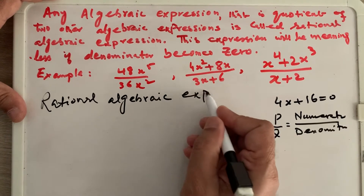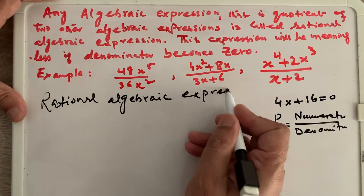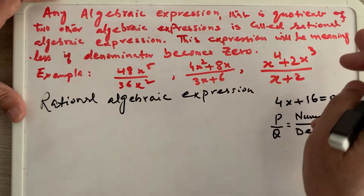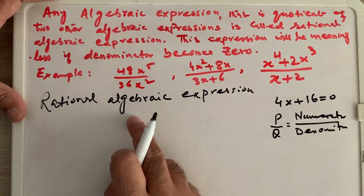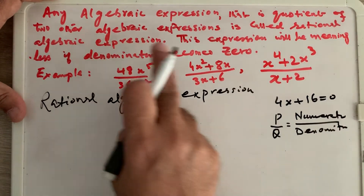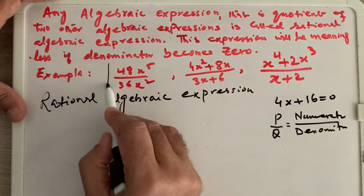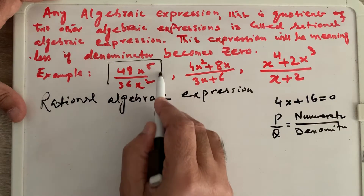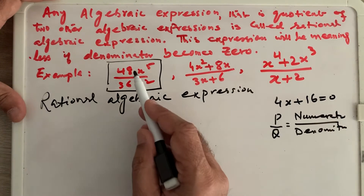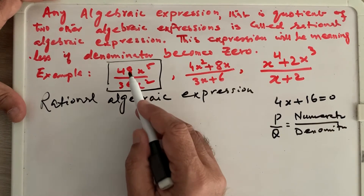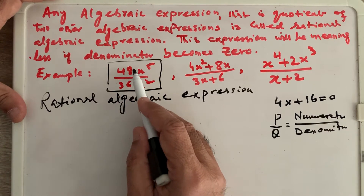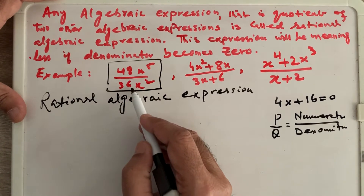By definition, a rational algebraic expression is the quotient of two algebraic expressions. We can see in the example that there are two algebraic expressions — one in the numerator and one in the denominator.